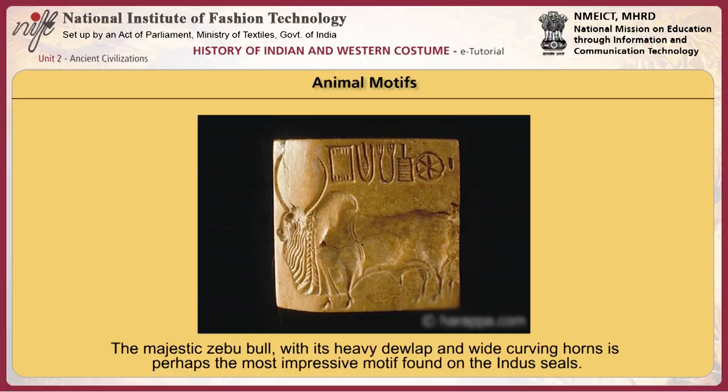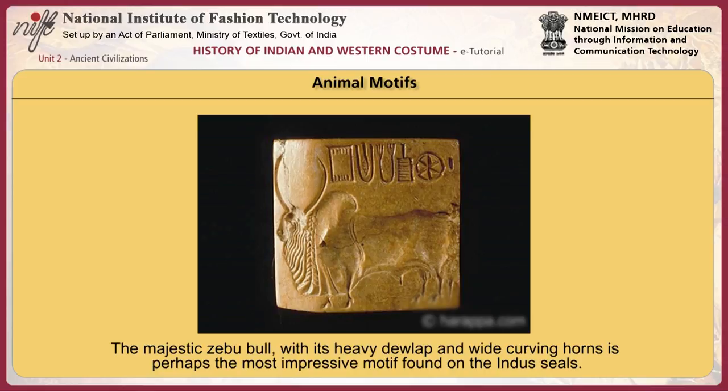The majestic zebu bull with its heavy dewlap and wide curving horns is perhaps the most impressive motif found on the Indus seals. Generally carved on large seals with relatively short inscriptions, the zebu motif is found almost exclusively at the largest cities of Mohenjodaro and Harappa.